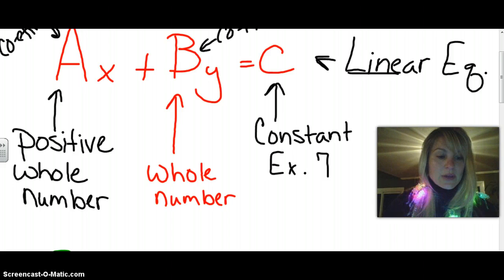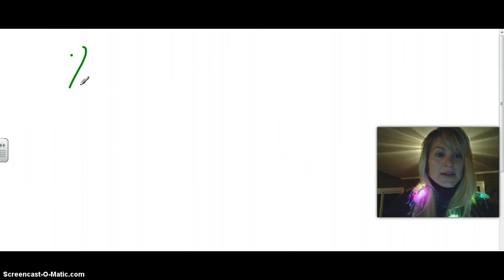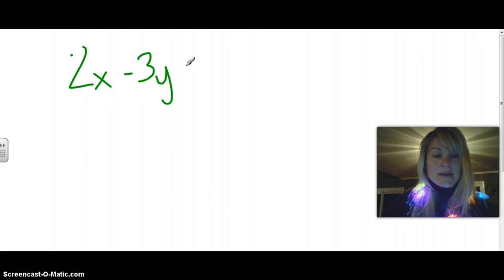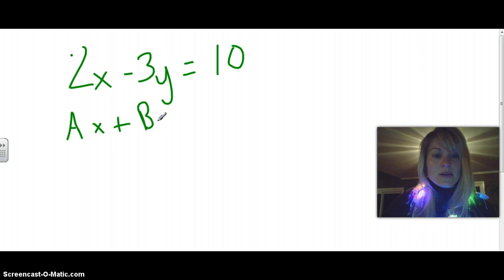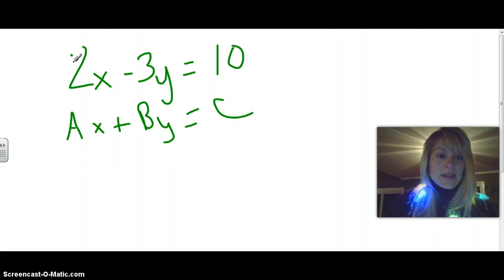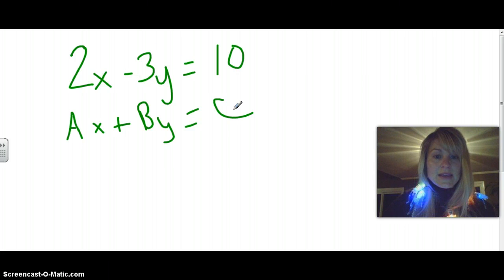So looking at an example, if I had 2x minus 3y equals 10, this is an example of a standard form equation. Our standard form equation is ax plus by equals c. So the coefficient for a here is 2 — a is the 2, and this has to be a positive whole number, so we're good there. The coefficient for y is b, so b here is negative 3, and the constant here is 10. Remember, this is a whole number without variables.